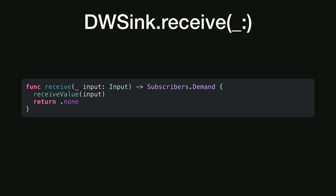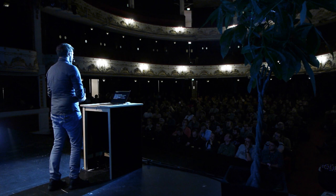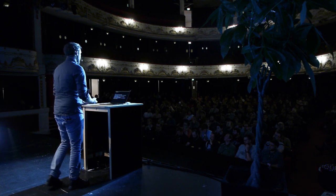The second flavor of receive returns a Subscribers.Demand object. In our implementation, when a subscription sends a value to our DWSink, we forward it to the closure that was passed in, and we return a demand of none. You might think: we're requesting values, and then suddenly after receiving a value we don't want any more? That's weird. But the way demands work is additive. Let's say when we receive a subscription we initially ask for only one item — the subscription will have a demand of one and will only pass one item to our subscriber.